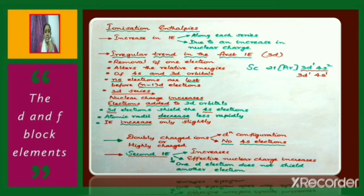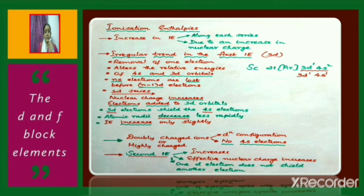We know that ns electrons are lost before (n–1)d electrons. As we move along the 3d series, nuclear charge increases, but electrons are added to the 3d orbitals, which progressively fill. The 3d electrons shield the 4s electrons, so atomic radii decrease less rapidly, which is why ionization enthalpy increases only slightly.